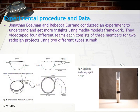Experimental procedure and data: Jonathan Edelman and Rebecca Carano conducted an experiment to understand and get more insights using the Media Models Framework. They videotaped four different teams, each consisting of three members, for two redesign projects using two different types of stimuli. First stimulus: a CAD model of a device expected to analyze the properties of material — see figure 8. Second stimulus: a rough physical prototype of a device expected to project a voice to a specific user — see figure 9. They gave instructions deliberately vague to see what effects the stimuli would have.